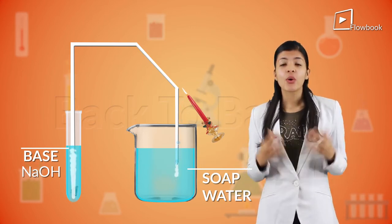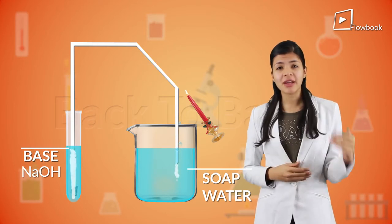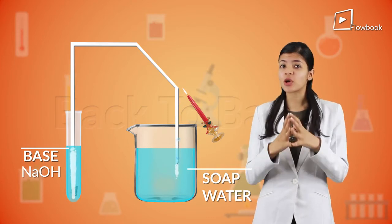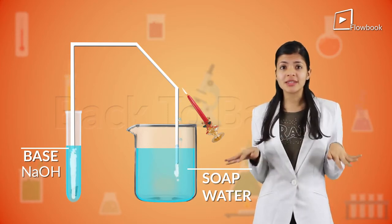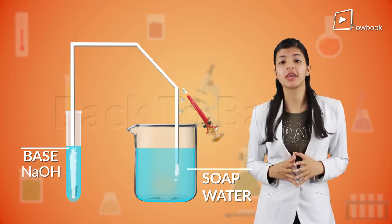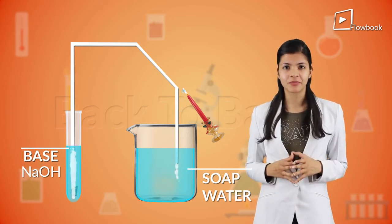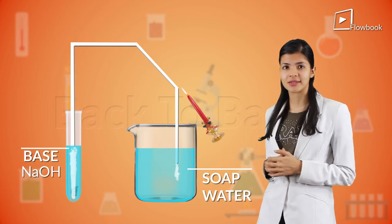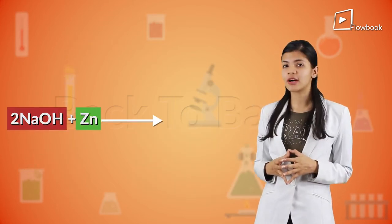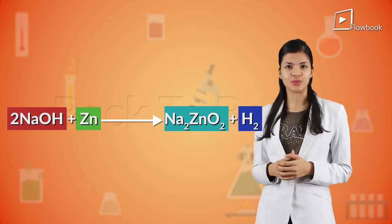So now we have seen that when a metal reacts with an acid or a base, hydrogen gas is always liberated. In this reaction we also get the product of a salt. Here it is sodium zincate. The reaction is somewhat like this: 2NaOH plus Zn will give us Na2ZnO2 plus H2.